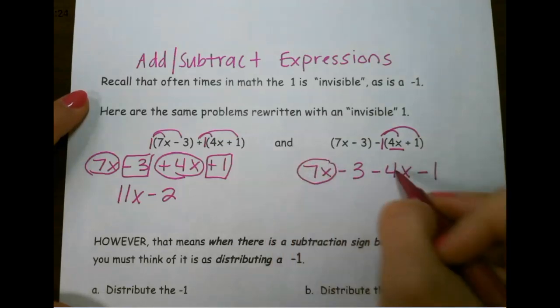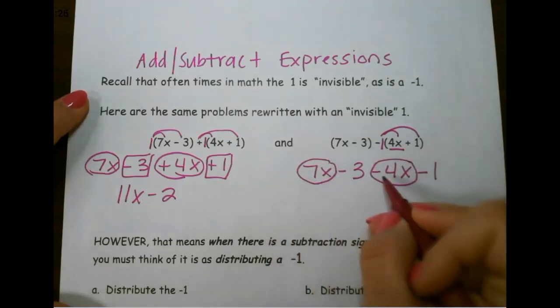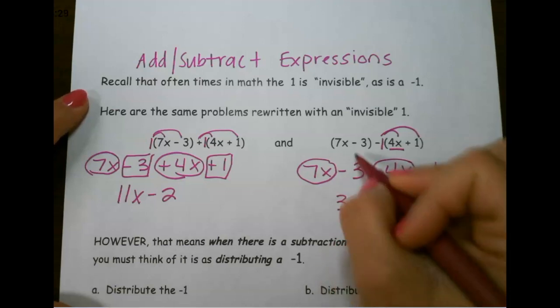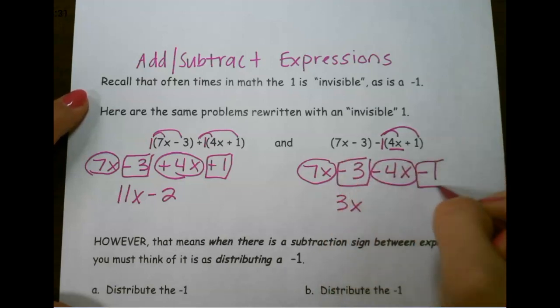Then we combine like terms. 7x minus 4x is 3x, and negative 3 and negative 1 would be negative 4.